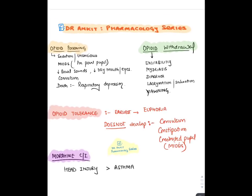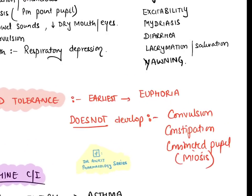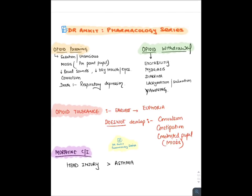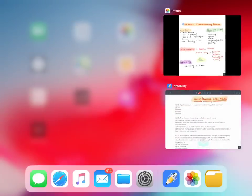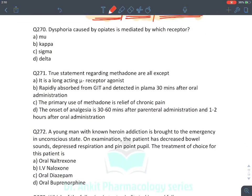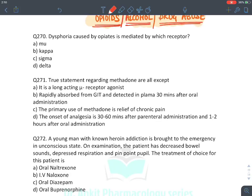Opioids show rapid tolerance — earliest tolerance develops to euphoria. Tolerance does NOT develop to three effects: convulsions, constipation, and constriction of pupil (miosis). This is important for MCQs.